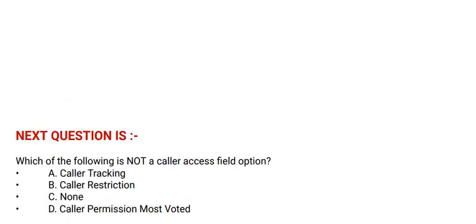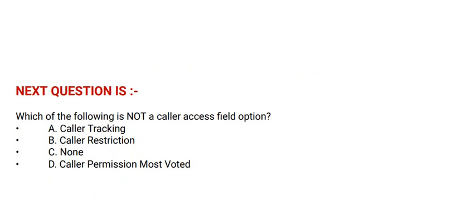Next question: Which of the following is not a caller access field option? Option A: Caller tracking. Option B: Caller restriction. Option C: None. Option D: Caller permission. The correct answer is Option D.